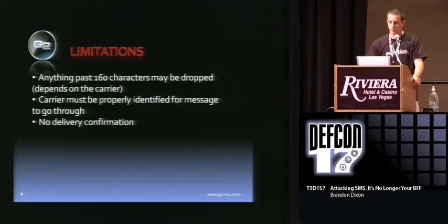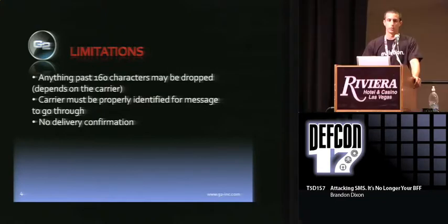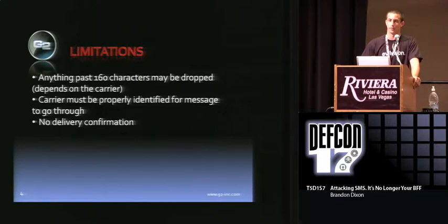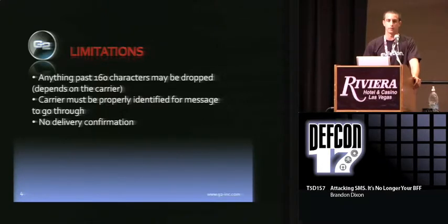Some of the limitations with this attack: anything past 160 characters may be dropped, and this depends on the carrier. Some carriers will do the truncating for you and send multiple messages based on the length of the actual email you send, while other ones just drop anything past 160. The carrier must also be properly identified for the message to go through. And as with SMS, there's no delivery confirmation — no reliable means of knowing the message made it through to the actual user.